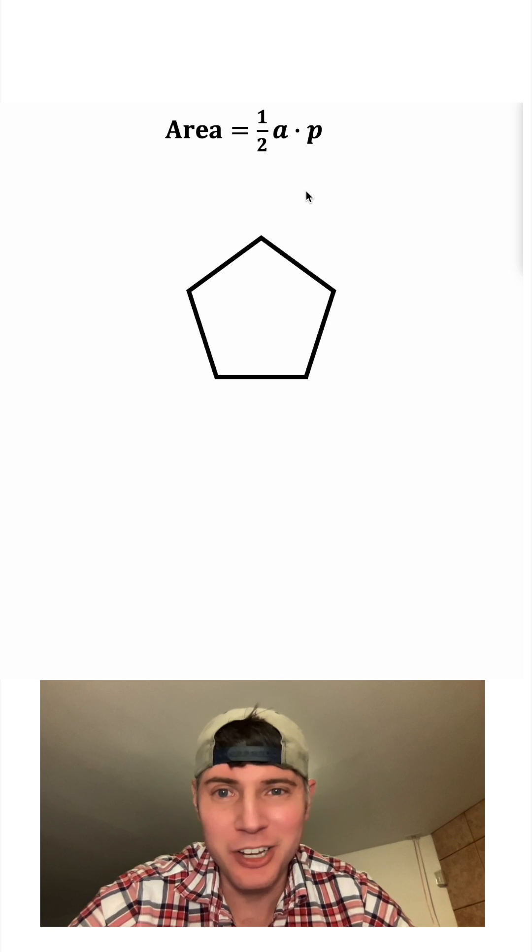Hey guys, if you have a regular polygon, that means that all the sides and all the angles are congruent. A great way to find the area of that polygon is one half apothem times perimeter.